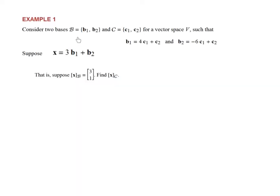In our first example, we have basis b and a basis c, two different bases for our vector space v, such that b1 equals 4c1 plus c2, and b2 equals negative 6c1 plus c2. So we're given basis b in terms of basis c, we know the relationship between them. We're also given x in terms of basis b, and the question asks us to find x in terms of basis c.